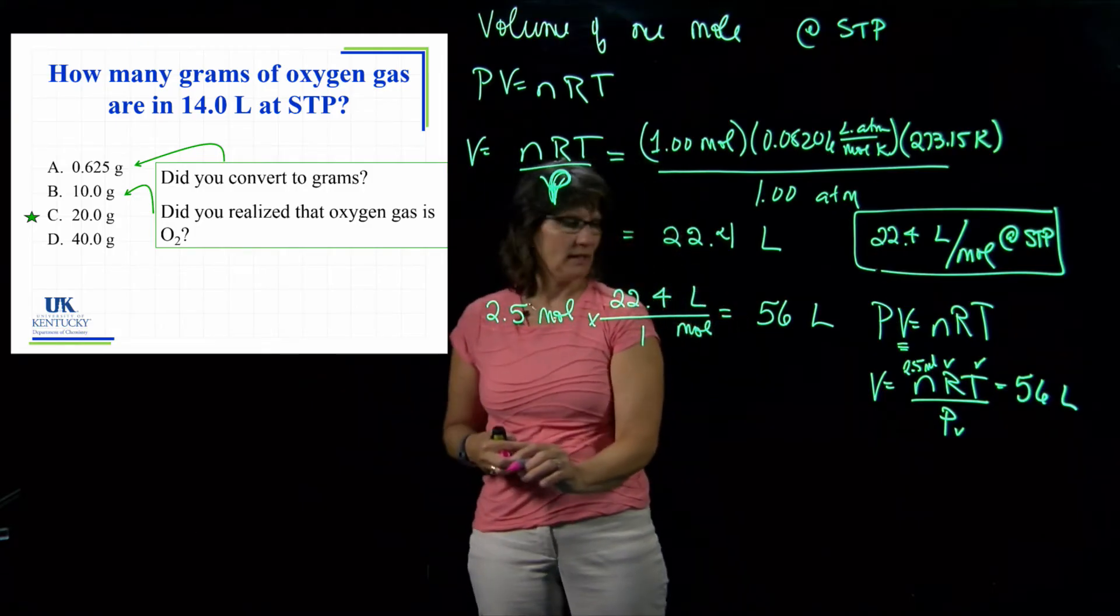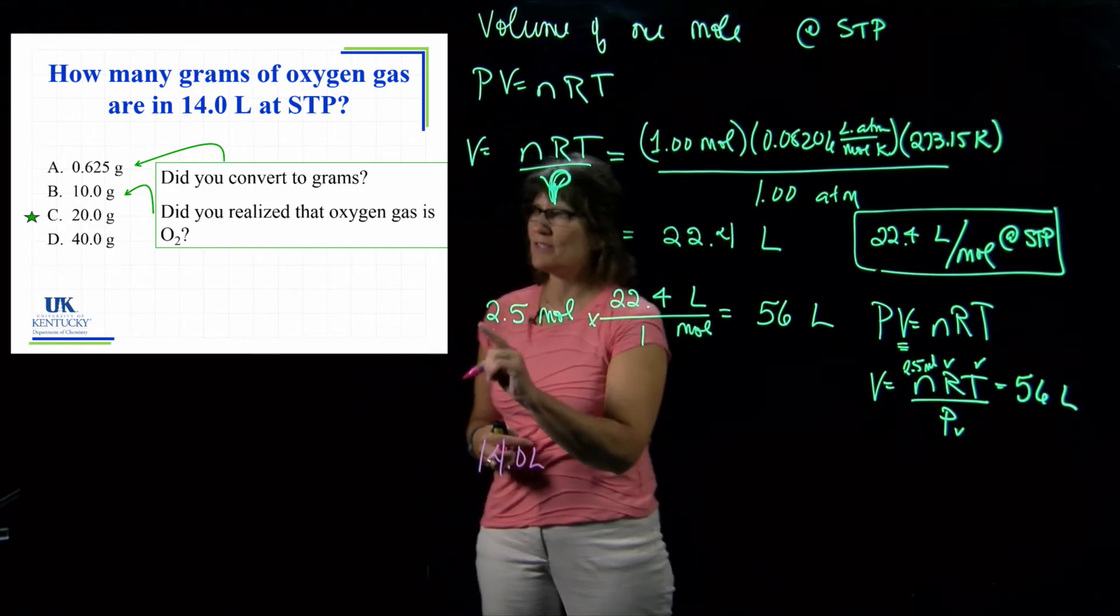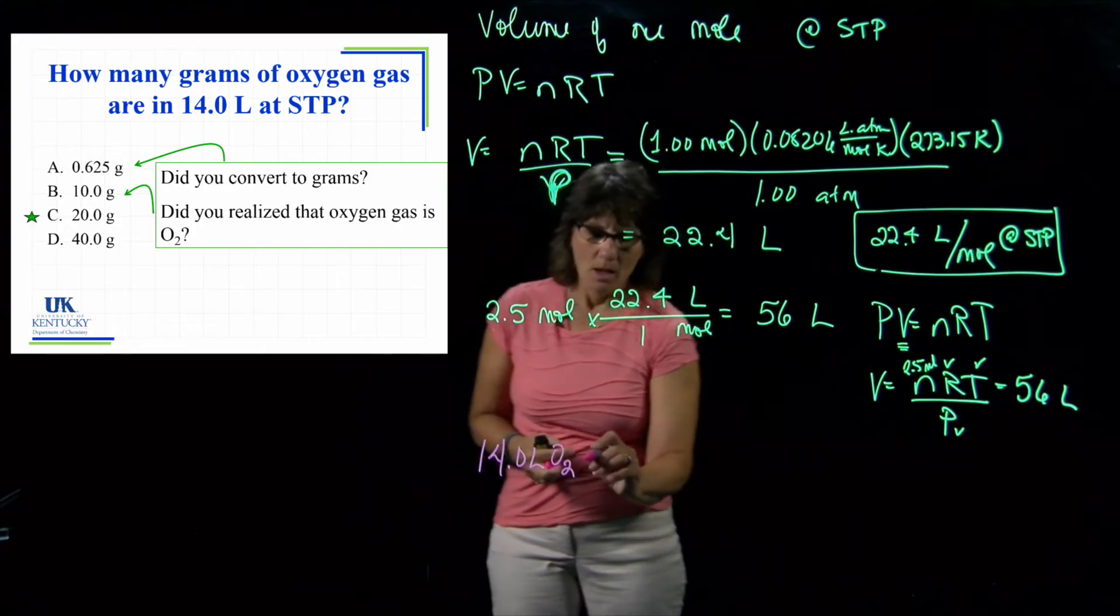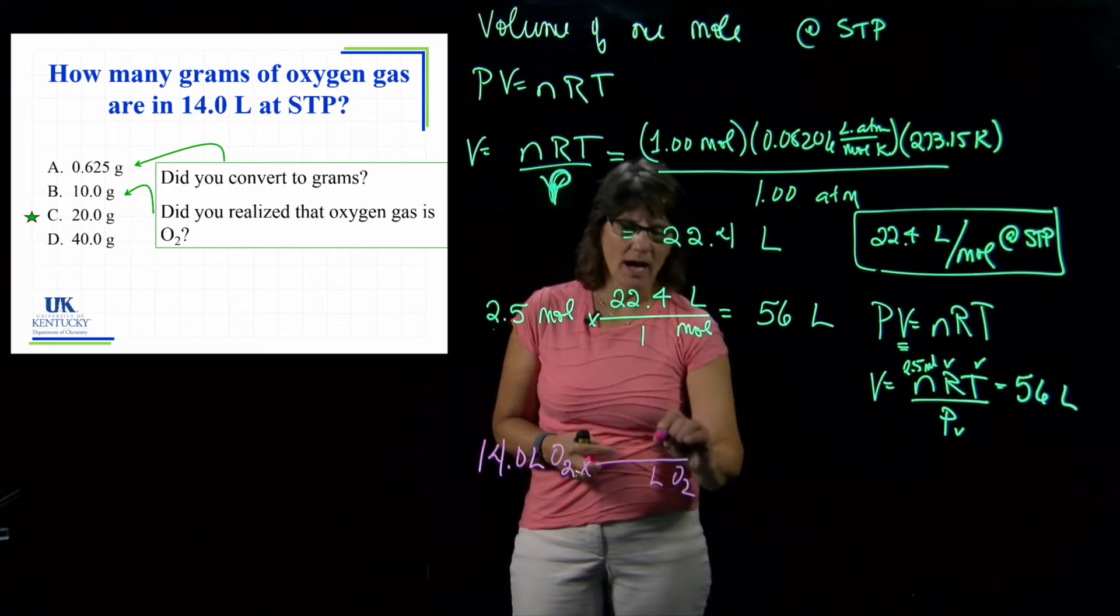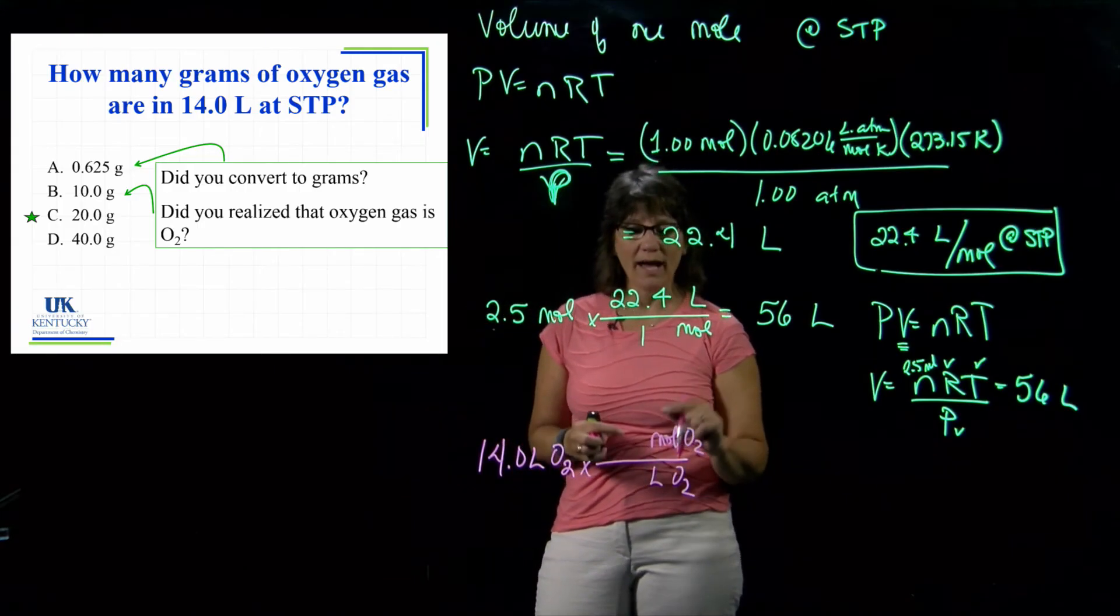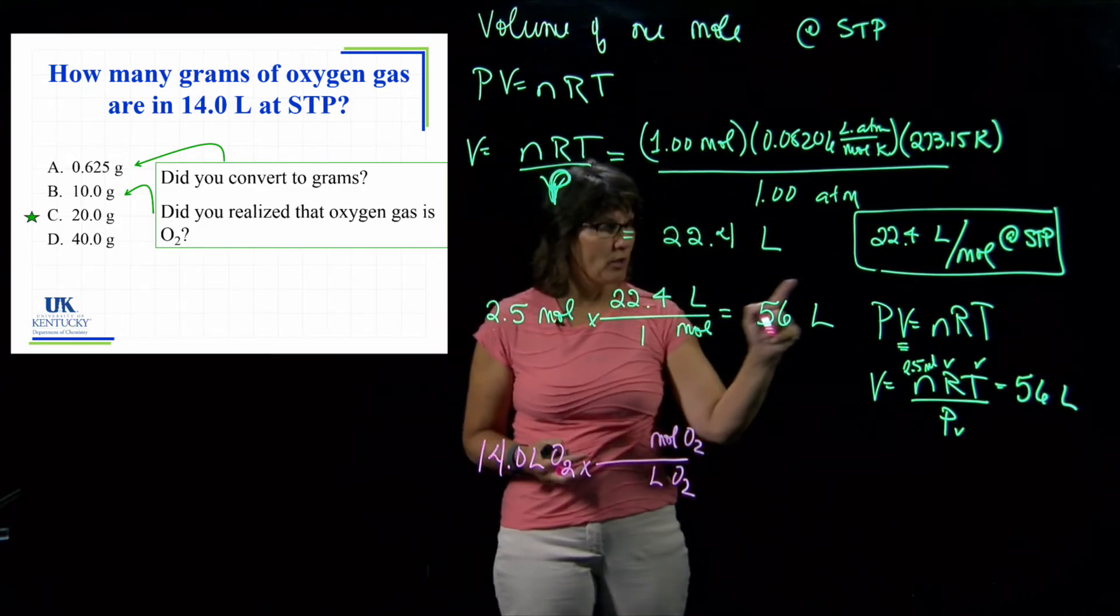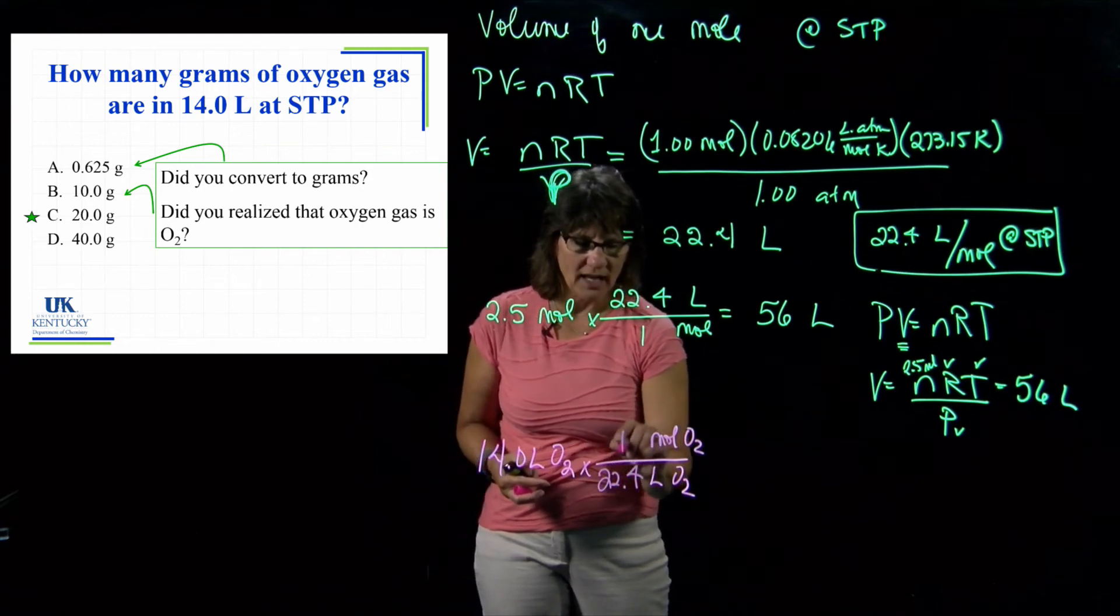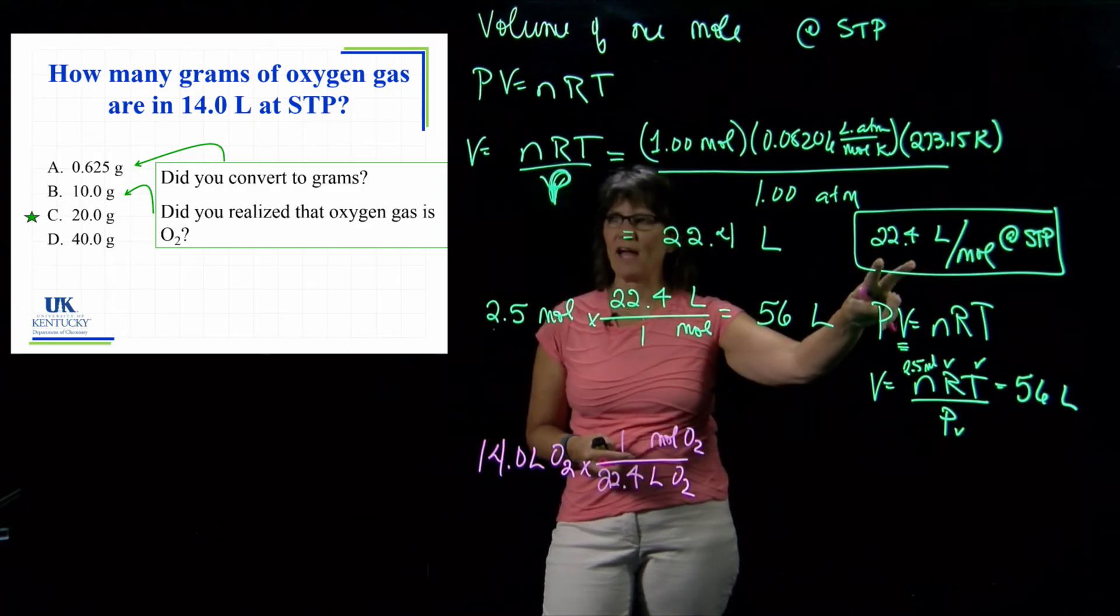I am given that I have 14 liters of O2 oxygen gas at STP. I don't want liters of O2, I want moles of O2. Why would I want moles? Because I know that once I know moles, I can get to grams. The relationship is that there's 22.4 liters in every mole, so I'm using this as a conversion factor.